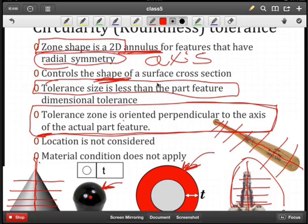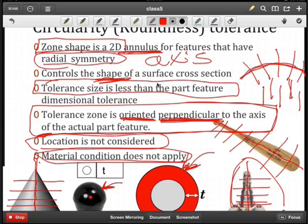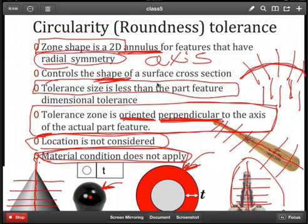And the orientation is perpendicular to the axis of that part feature. So if the axis bends, we have an axis that looks like that. Then we have to take the perpendicular to that. And as you can see, it's changing. The orientation of the tolerance zone is changing. Clearly, location is not considered. And therefore, we can have cross sections that move up and down as we go down the axis. So we're not concerned about that. Also note, you cannot use the M or the L for material condition if you're dealing with circularity.